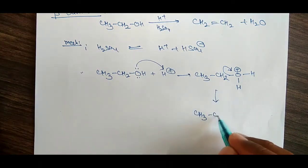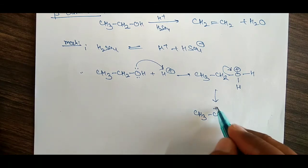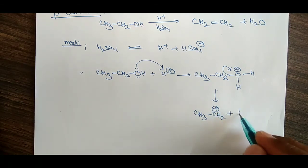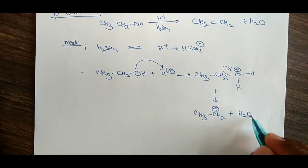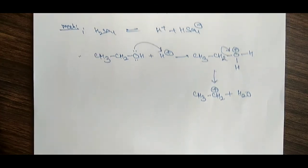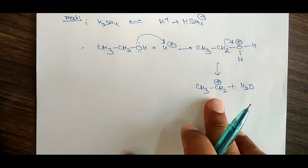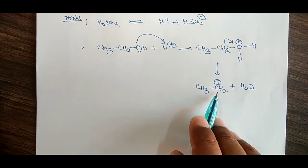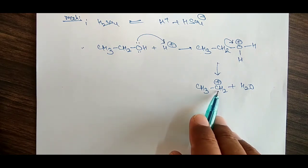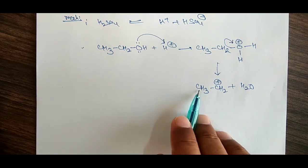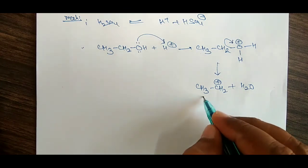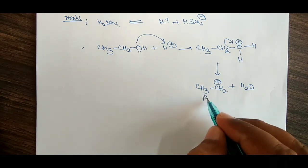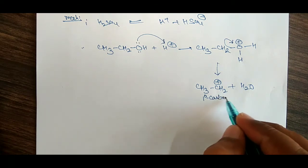Being an electronegative element, oxygen does not retain the positive charge and therefore pulls electron density toward itself from the adjacent carbon. Therefore, what we get is CH3CH2 positive — a carbocation — with loss of water. A carbon carrying a positive charge is called a carbocation.